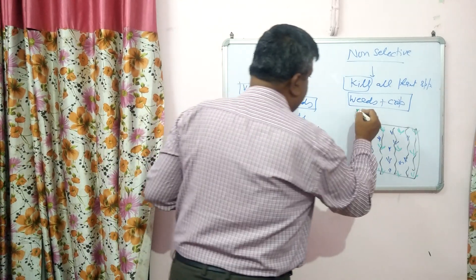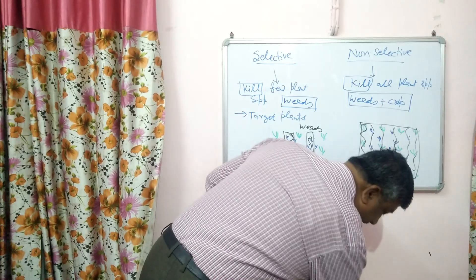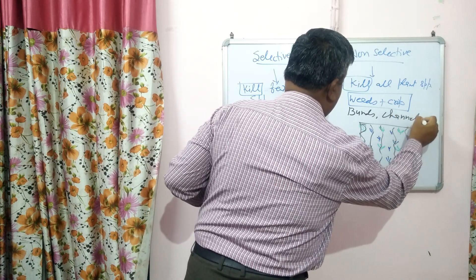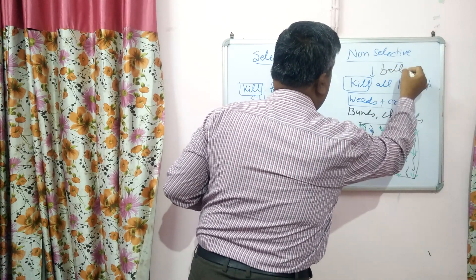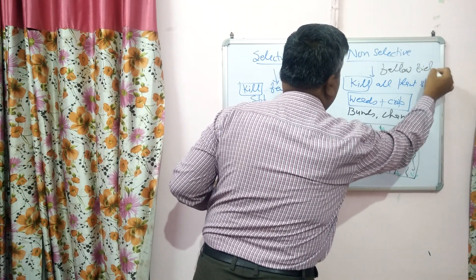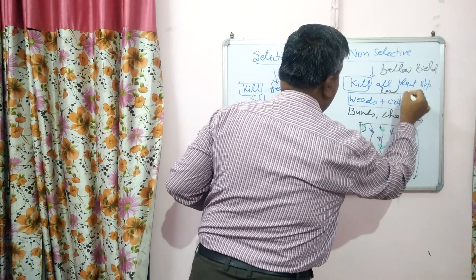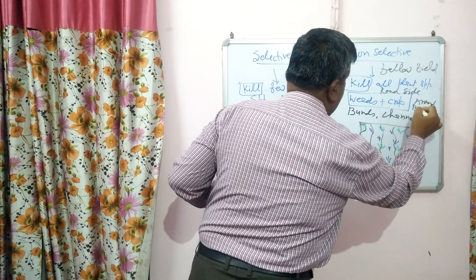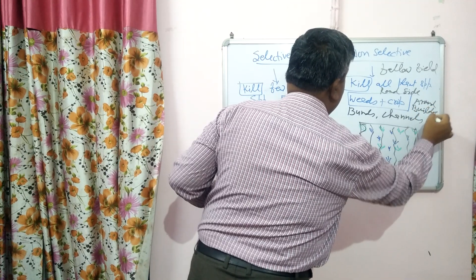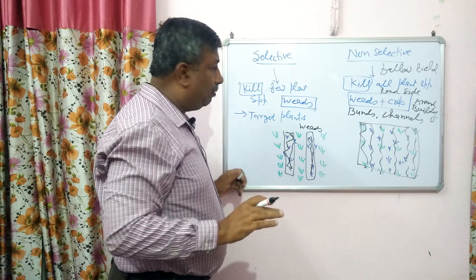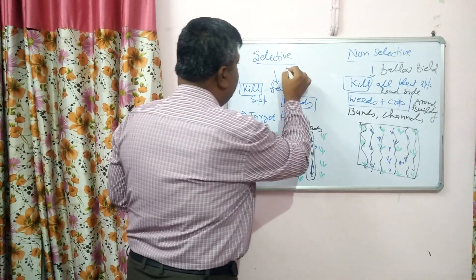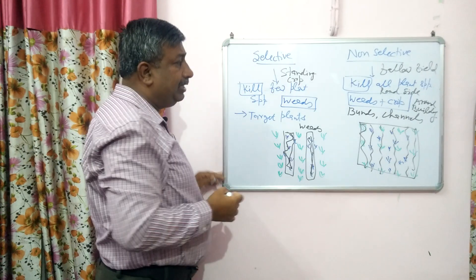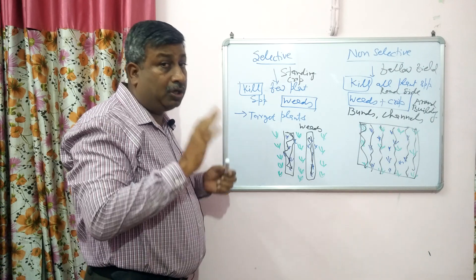Non-selective herbicides are applied on bunds, channels, fallow fields where there is no crop, roadsides, and building sides where there is heavy vegetation. So these herbicides are applied in those areas where there is no crop. While selective herbicides are applied in standing crop. Remember that selective herbicides are applied in standing crop while non-selective herbicides are not applied in standing crop.